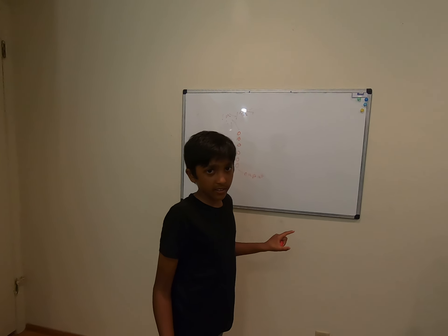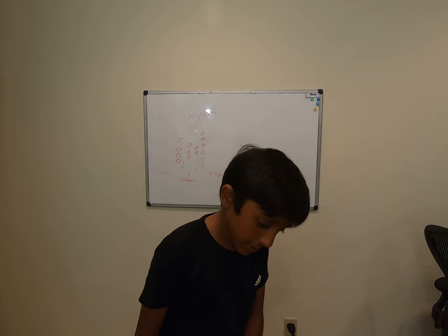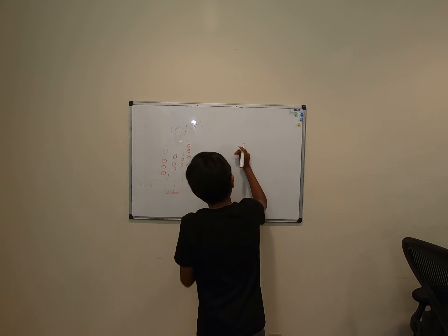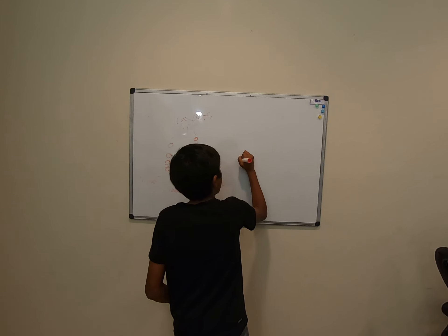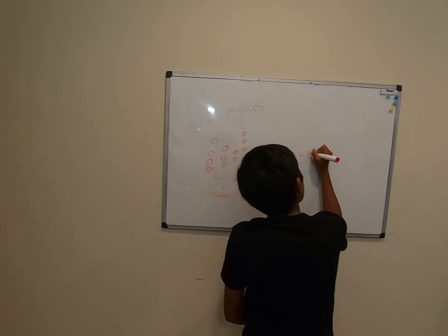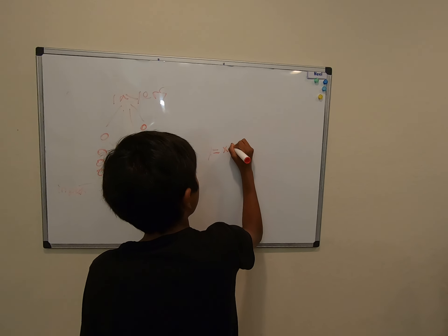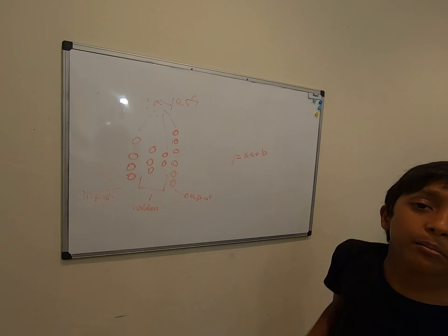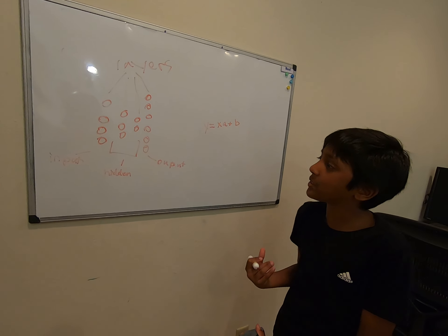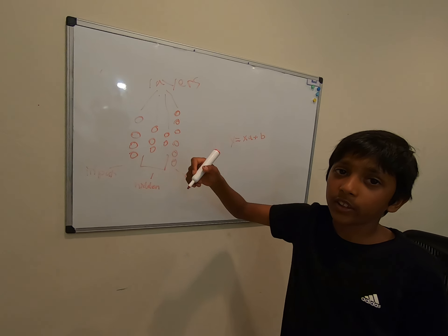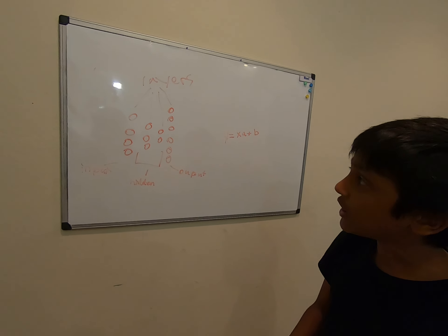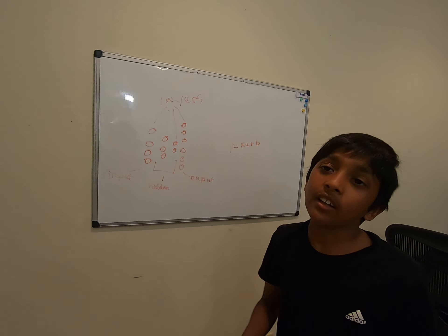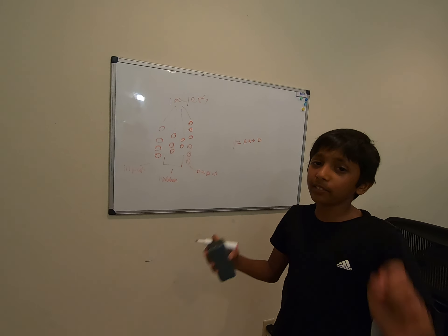When you're doing deep learning, you use gradient descent, and if you watch my other videos, what we used was y equals x times a plus b. Now this is a function, and there are many other families of functions. A neural network just happens to be a function, and with all these different constants — weights and biases — you create one big long function.